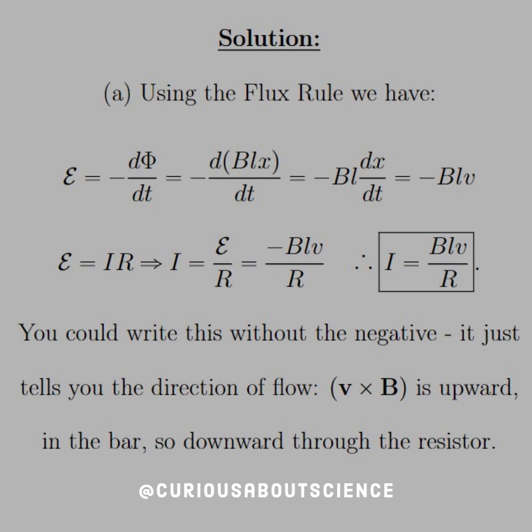So what they're saying is that you could write this without the negative. It just tells you that the direction of the flow, which we could find from the cross product from the force definition of EMF, would tell you that V cross B would be upward, but this is in the magnetic bar itself. So if I'm sending charges upward through the bar, that would therefore send it down through the resistor, hence the negative that we see with the flux rule. So pretty cool, but be careful because the ambiguity can catch up to you.